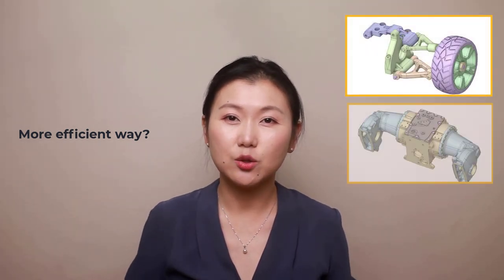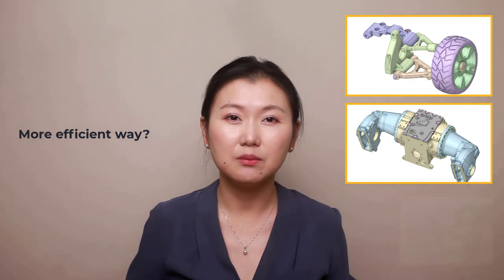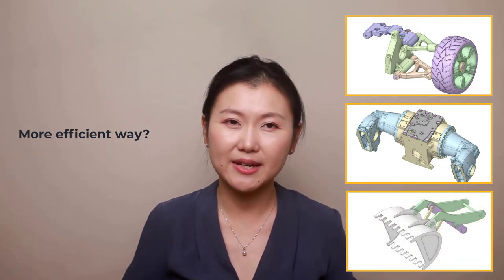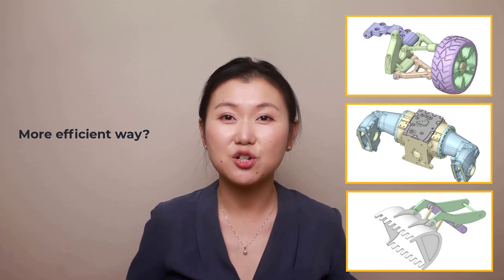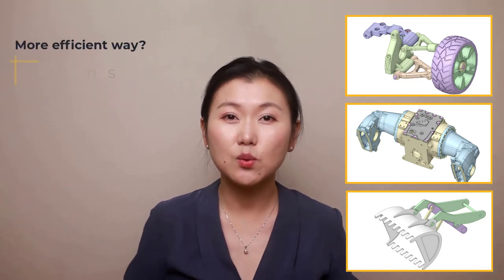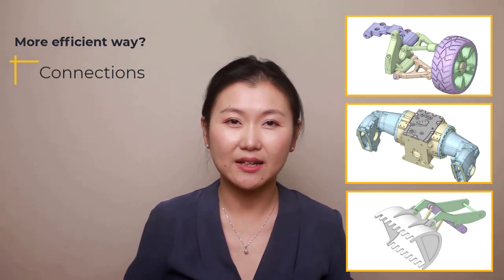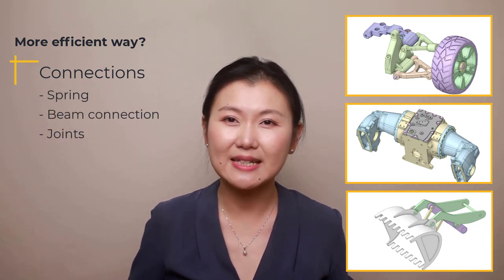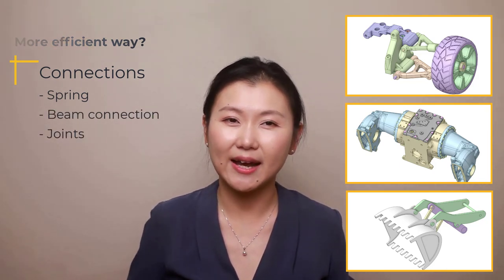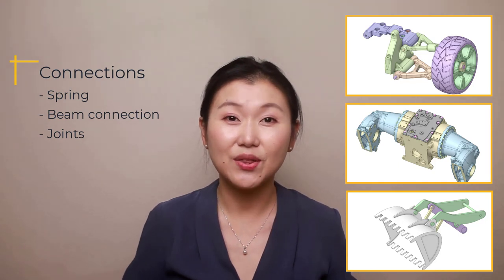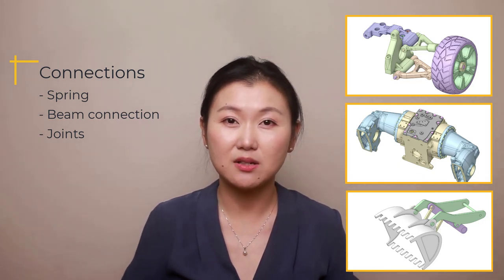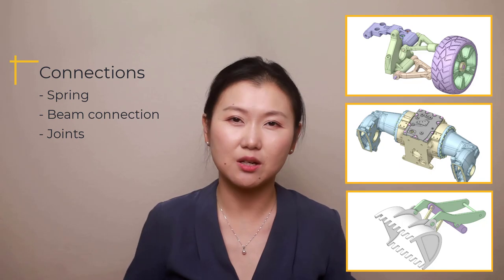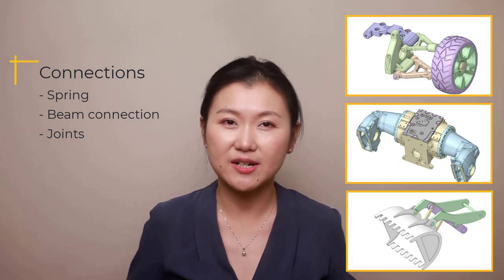For example, assemblies like a suspension system, rear axle, or digger arm include different types of kinematic behavior between parts. We can capture the interactions between the parts with simplified connections like spring, beam connections, and joint without modeling the detailed interaction via contact elements. Using such kinematic constraints between parts is a computationally efficient approach while working with large assemblies.